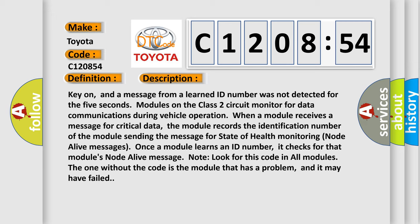Once a module learns an ID number, it checks for that module's node alive message. Note: look for this code in all modules. The one without the code is the module that has a problem, and it may have failed.